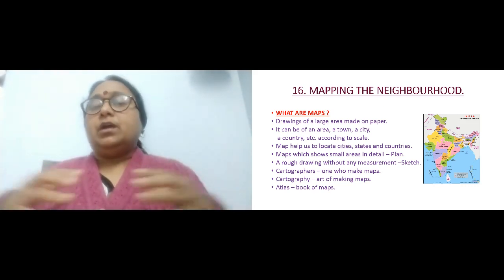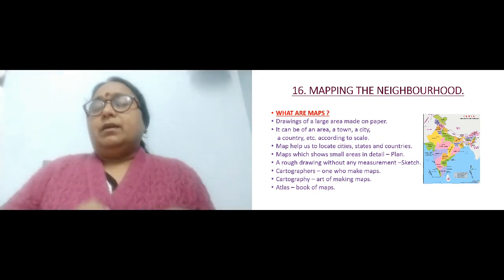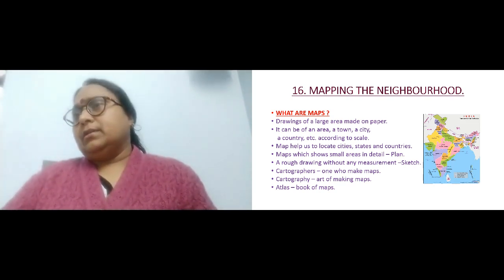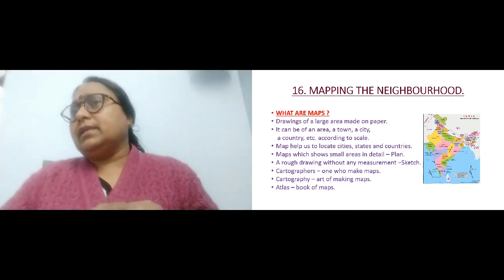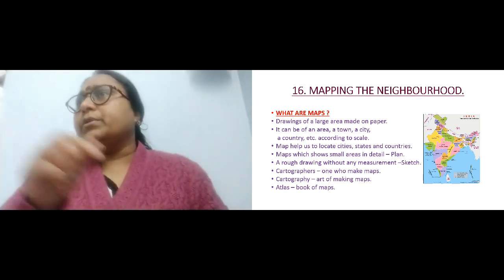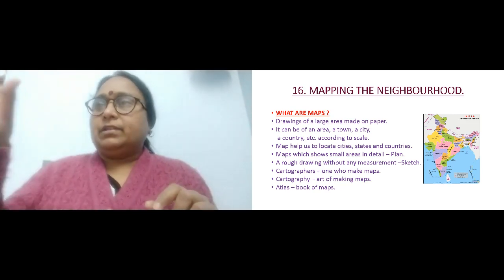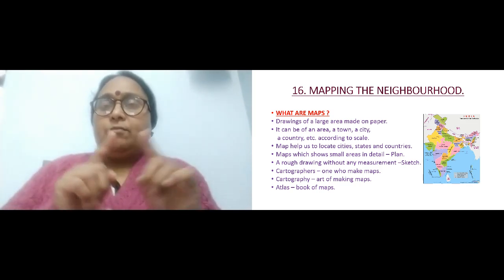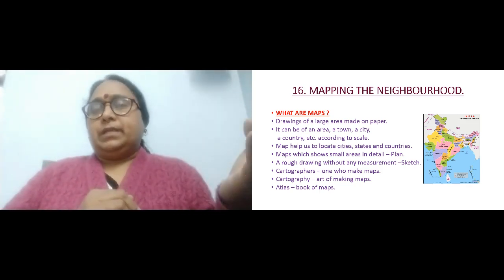Scale means you represent the same thing on a map but with a shorter distance. You can't draw one kilometer, so you draw a small area and write the scale on one side of the map. In a map you will find the scale and the landmarks written there — everything will be present — making it easy to understand how far a place is.